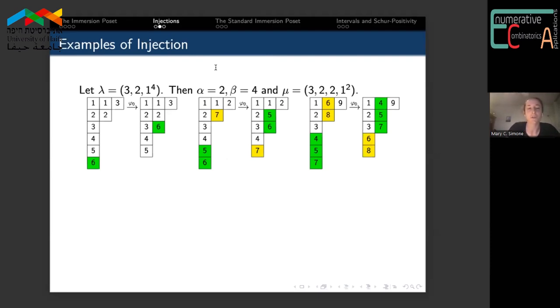I'll briefly sketch one such injection that we defined in our paper, this φ0 map, through some examples using explicit fillings of our shapes λ and μ. Essentially what our algorithm does is it identifies the content in the last box in column c and asks if it's legal to move this box and content into column c plus one so that we maintain semi-standardness. So we ask if six is strictly greater than two; since the answer is yes, we're safe to move our box and content to shape μ, and we have arrived at a semi-standard Young tableau of shape μ.